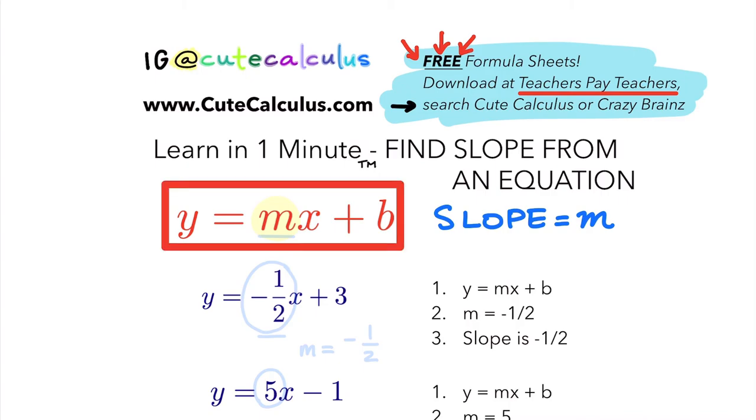This is the slope-intercept form of the equation. Looking at this first example, y equals negative one-half x plus three, we can see that negative one-half is in m's position. m is always going to be the whole number or the fraction or whatever negative number next to the x. So m is here, m is going to be negative one-half.